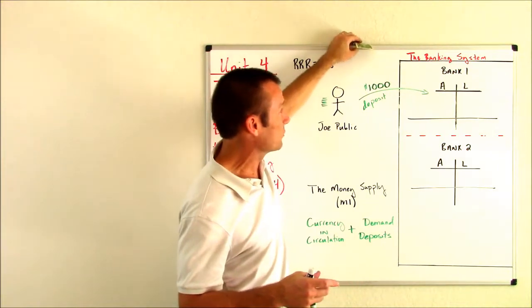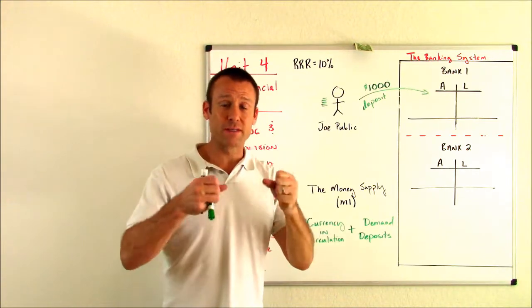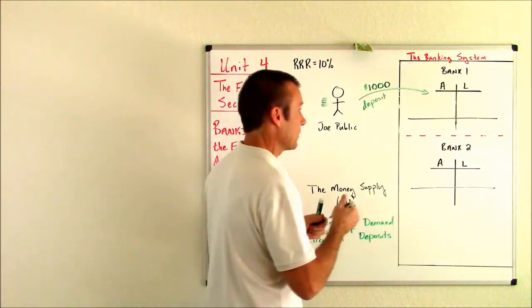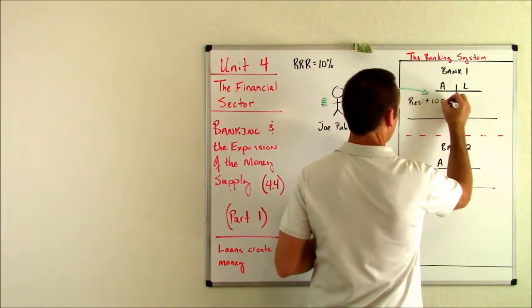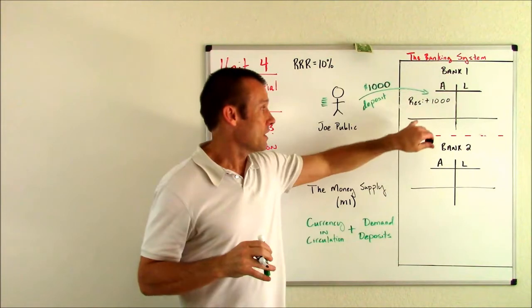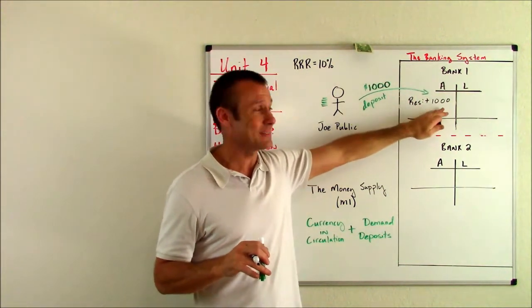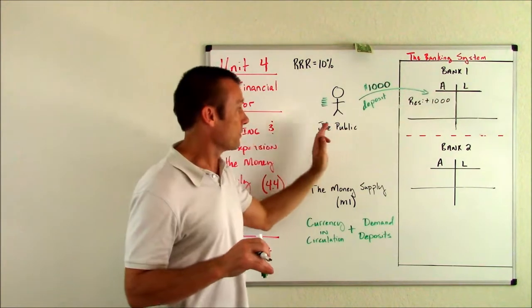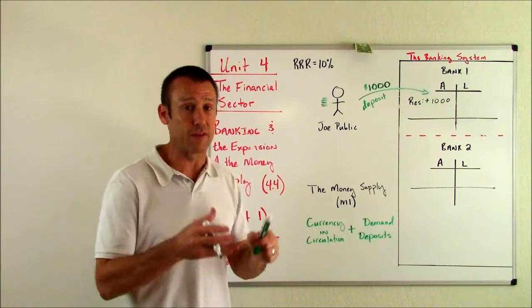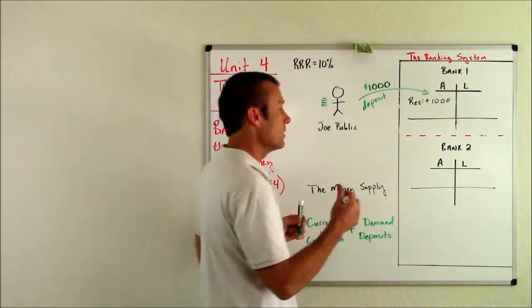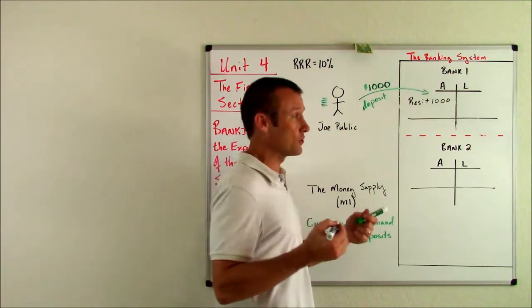So we're finally ready to record this transaction. He makes a deposit of $1,000. Bank one takes ownership of those pieces of paper. So their reserves go up by $1,000. They're taking ownership of those pieces of paper. And again, those pieces of paper inside the bank are known as reserves. But of course, Joe is getting his checking account credited. And that's something bank one owes to Joe. So by the way, demand deposits is the term for checking accounts.